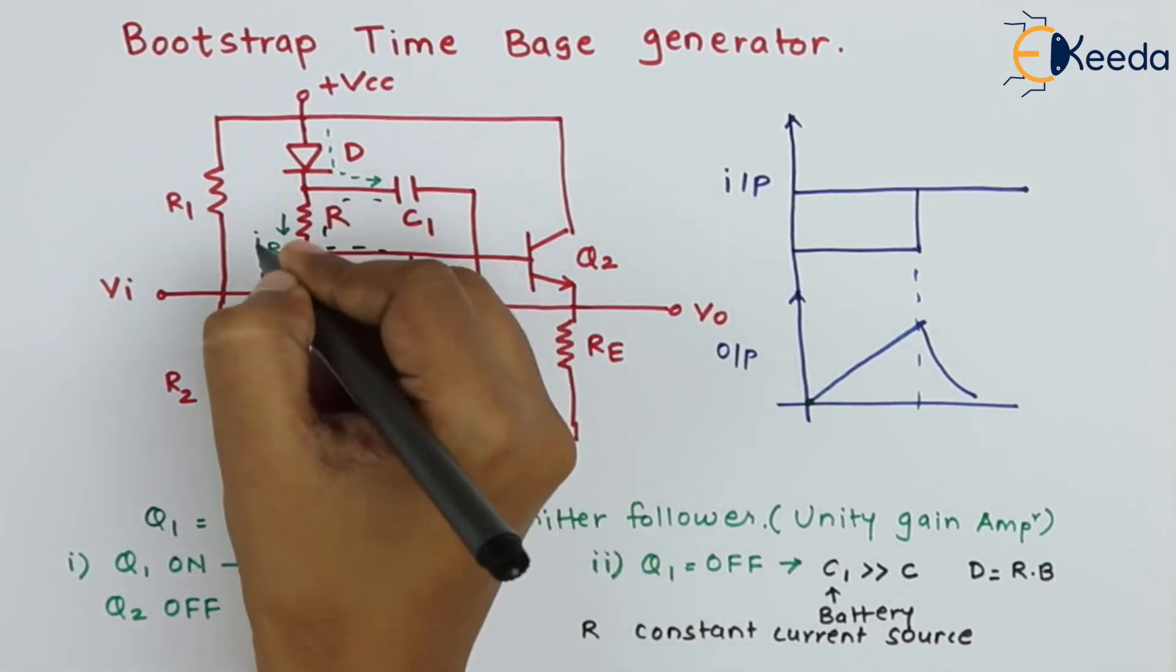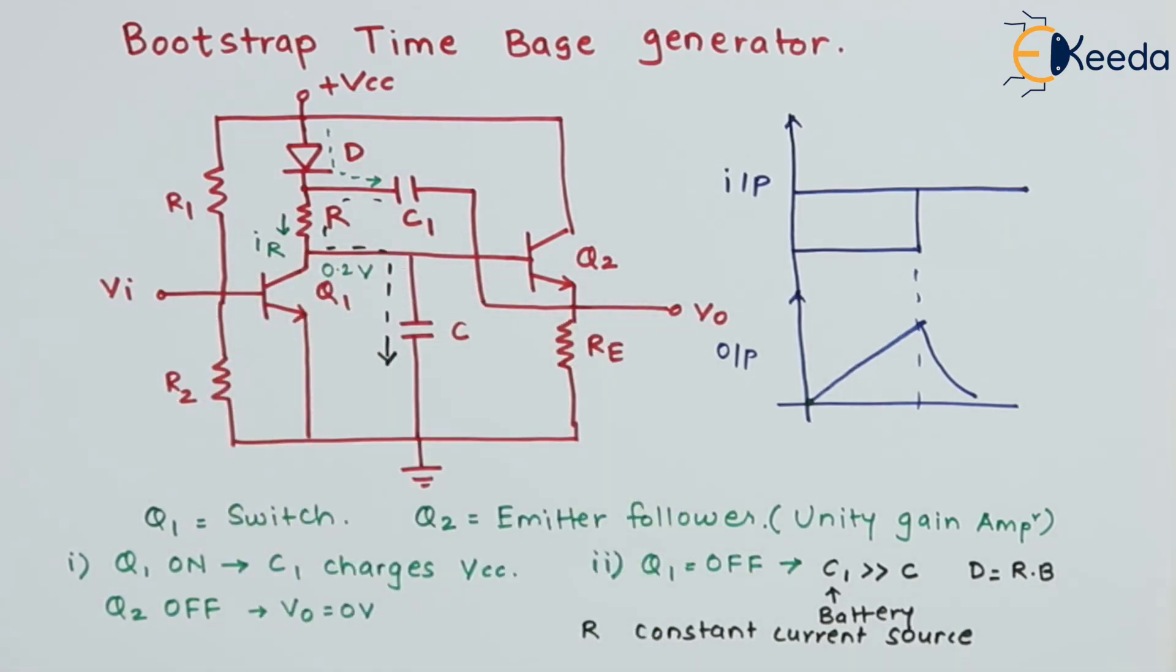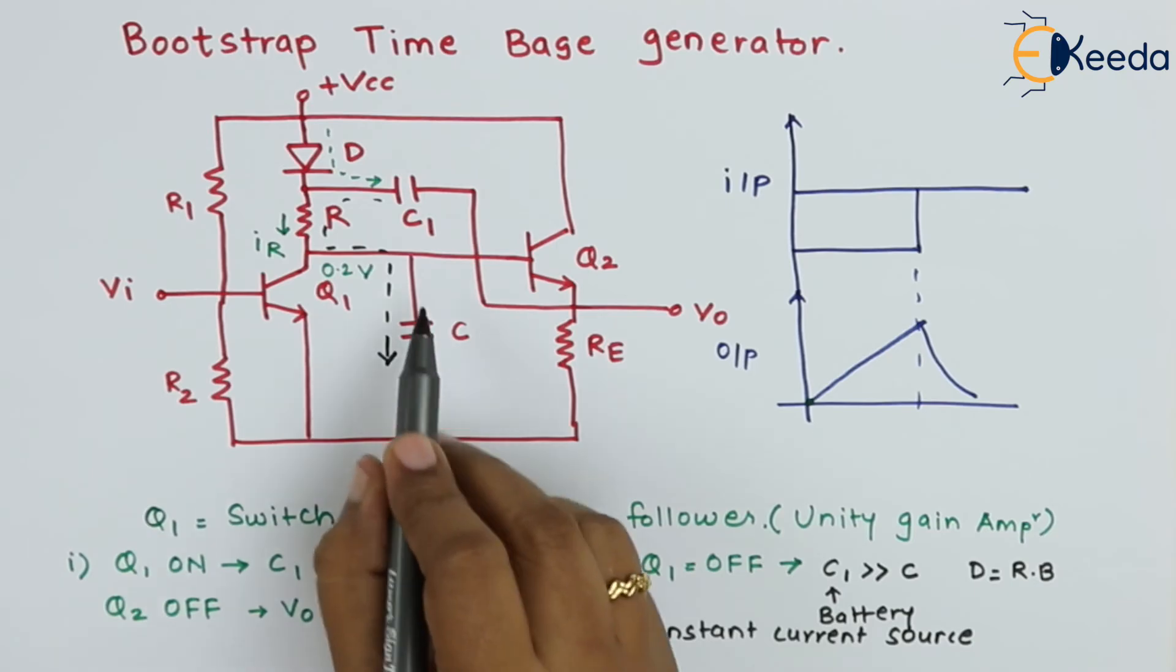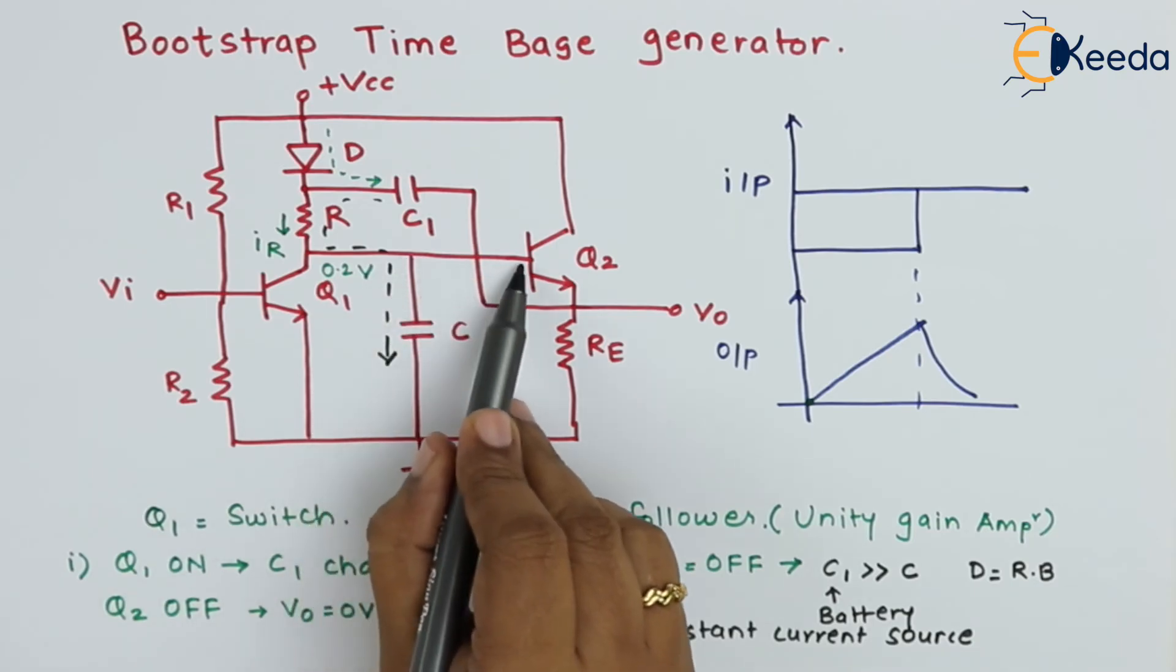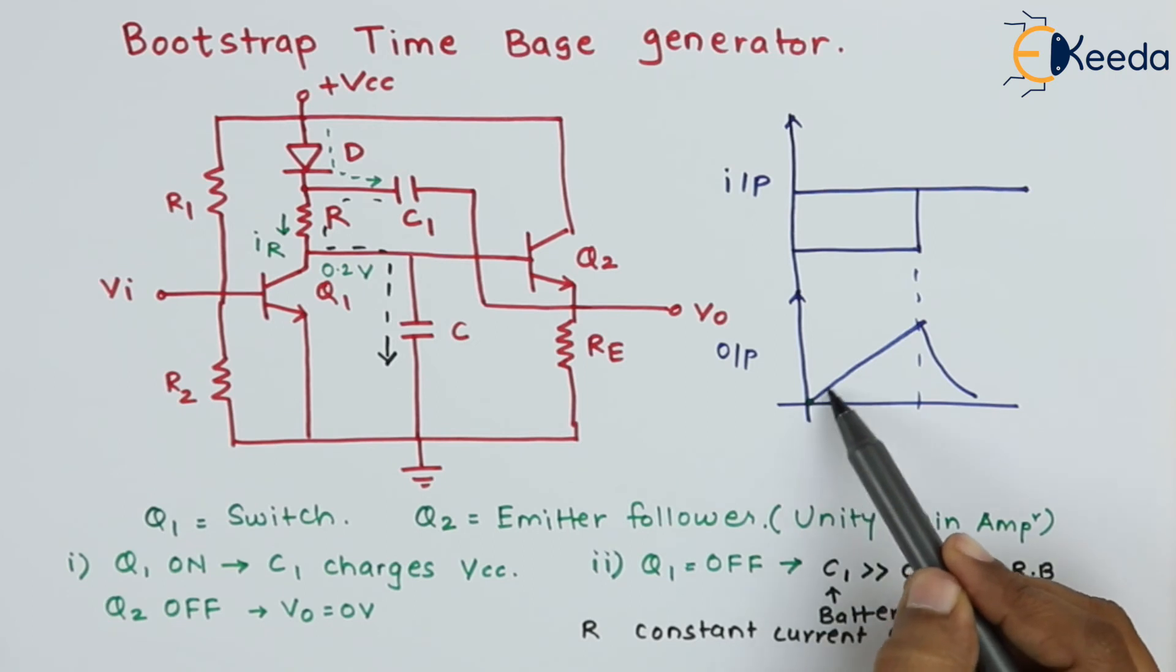So through this constant current, it charges capacitor C. As C is connected to the base of transistor Q2, as the capacitor voltage starts increasing, the base voltage at Q1 increases and as Q1 increases, the output voltage also increases.